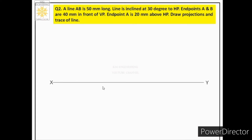To draw the first quadrant on paper, we first draw a reference line XY. The space above is considered as VP and space below is considered as HP. We label VP and HP in Gothic style. Now what is the third step?